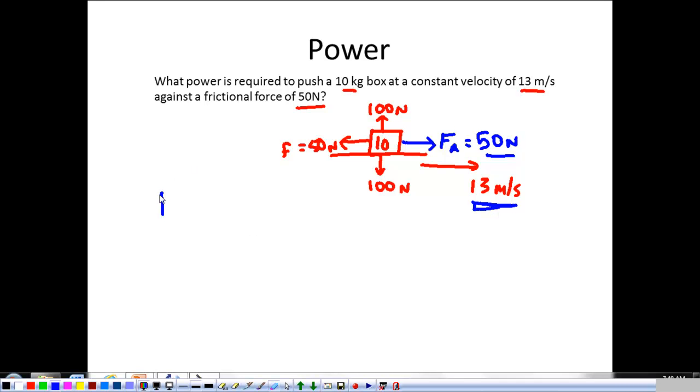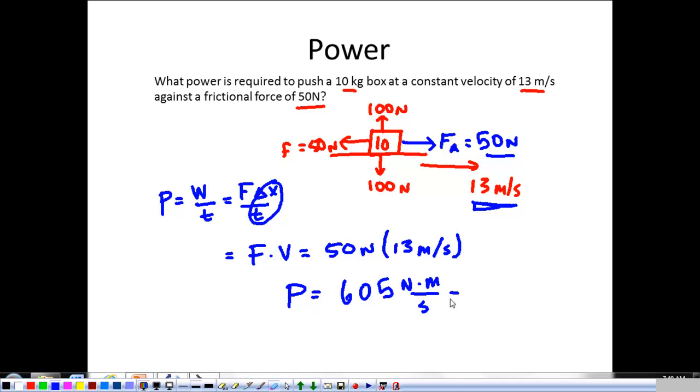So, power is work over time. So, that's force times distance over time. I don't have a distance. Nor do I have time. But I do know distance over time is velocity. So, we've got force times velocity. So, 50 newtons times 13 meters per second. So, my power comes out to be 650 newtons times meters over seconds, which is 650 joules per second, or we could have just said 650 watts. And that's really it with power.